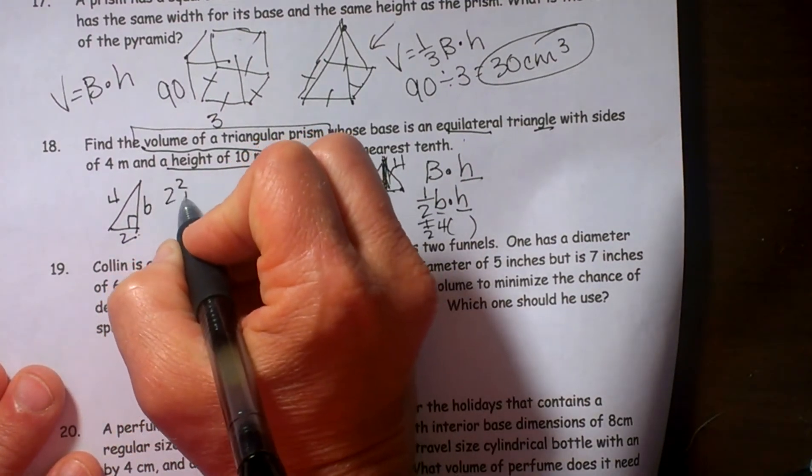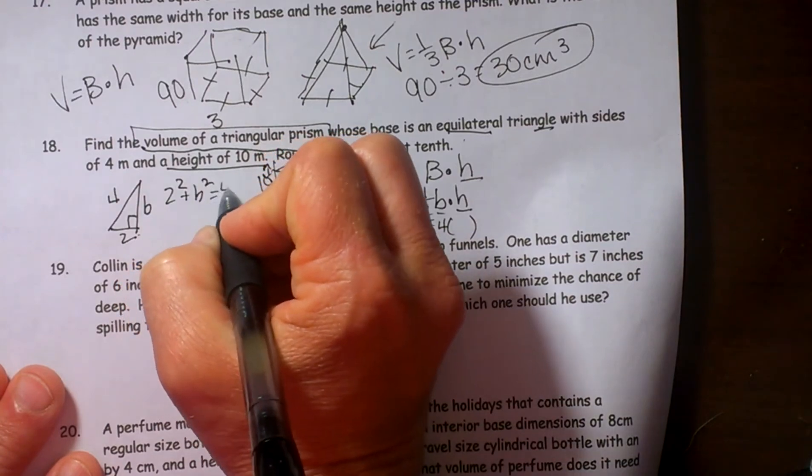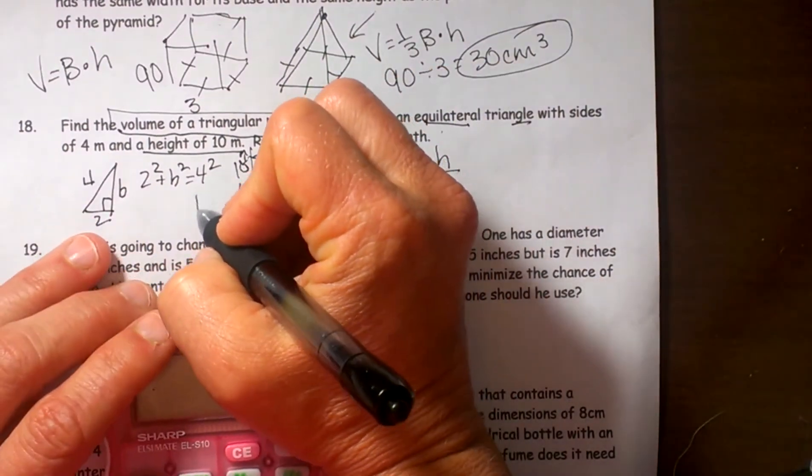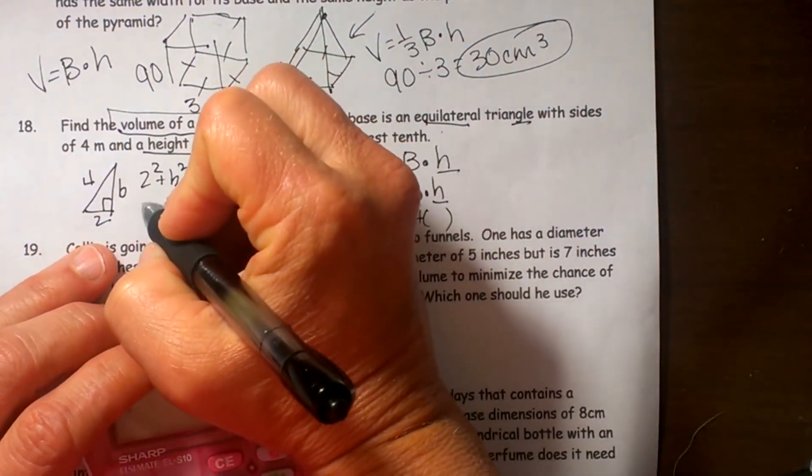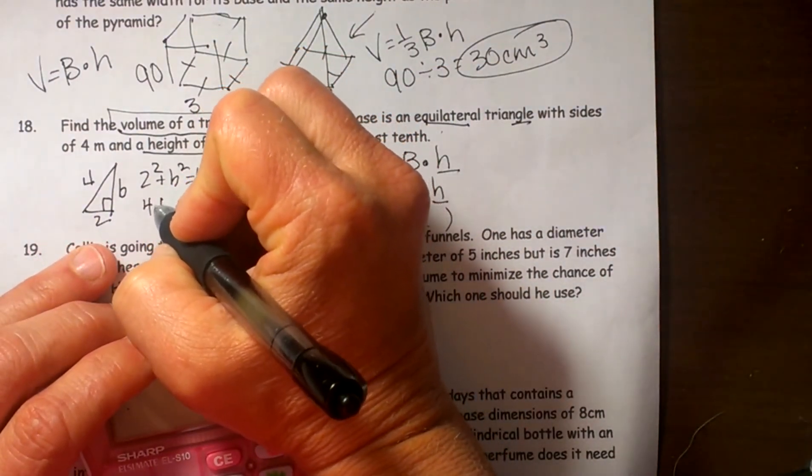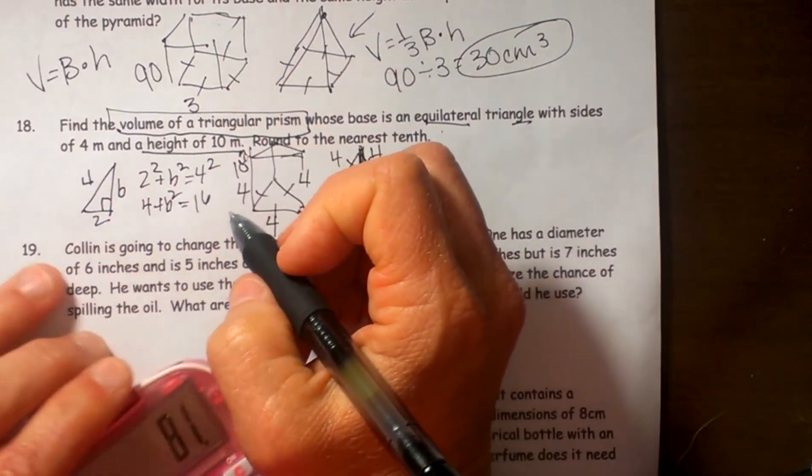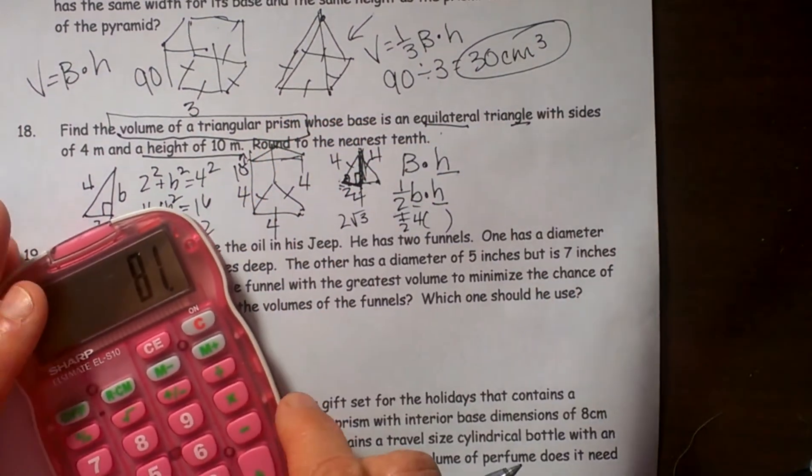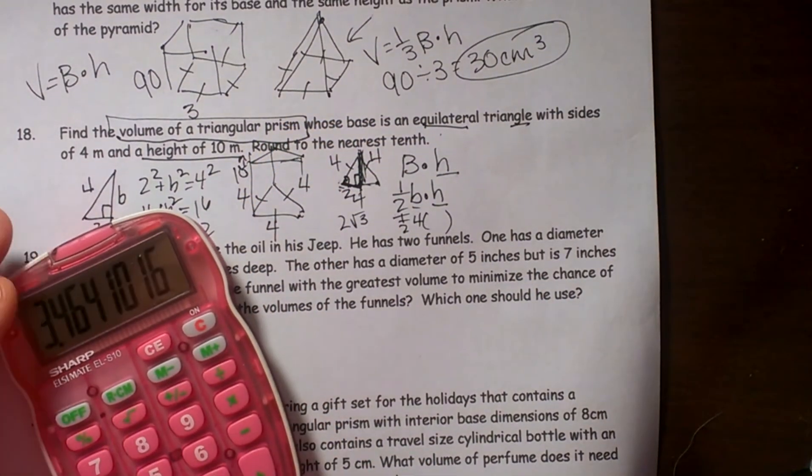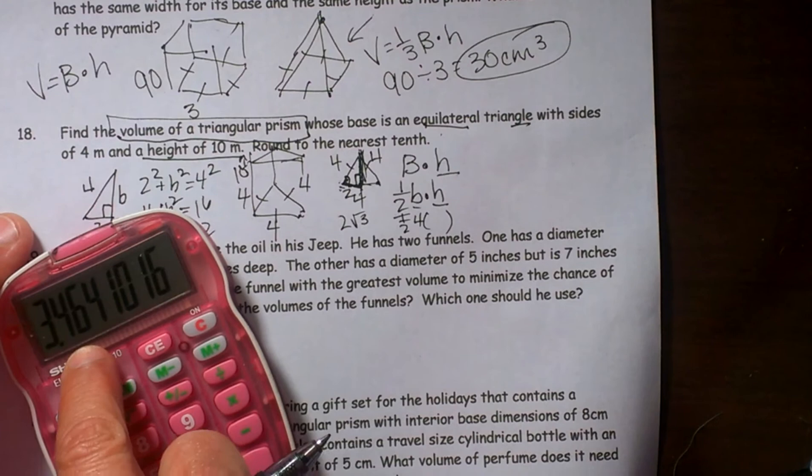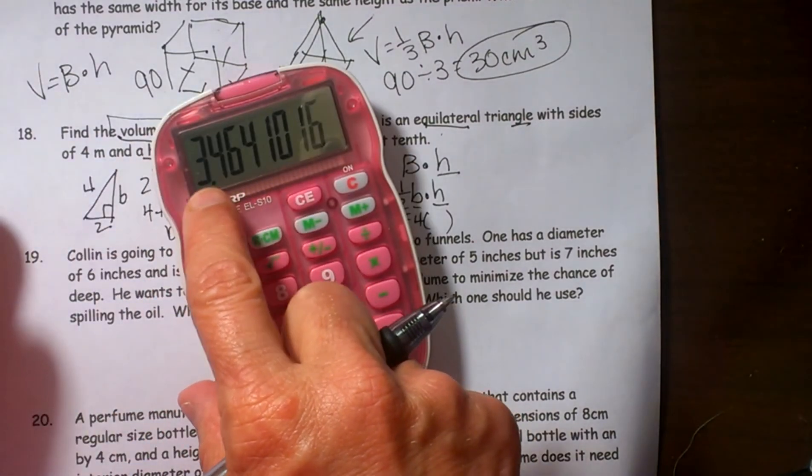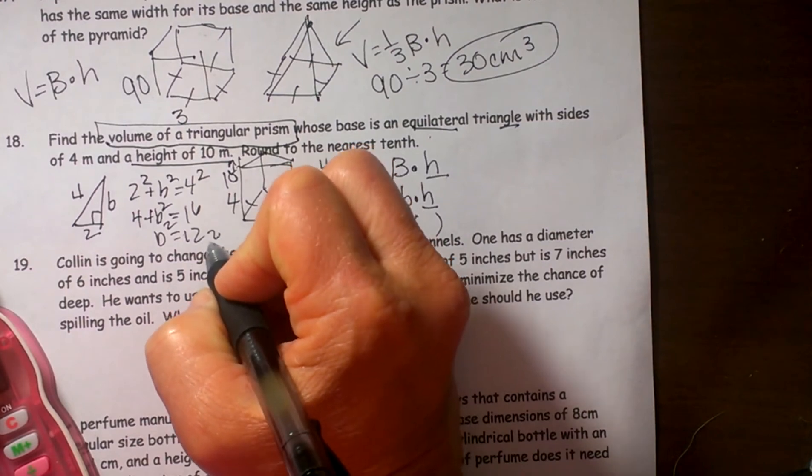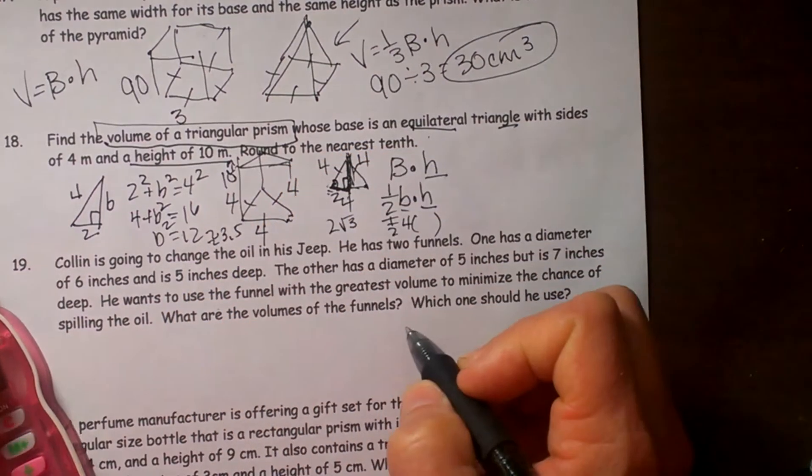So let's take two squared plus b squared equals four squared. So four squared is 16, and two squared is four, and we are going to solve for b squared. So b squared is equal to 12. So let's take the square root of 12 and we get three point, so let's round it to the closest tenth, which would be 3.5. So it is approximately 3.5.